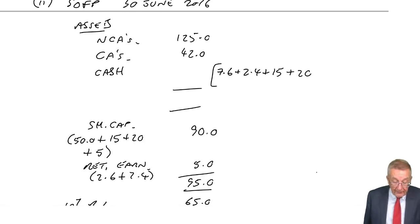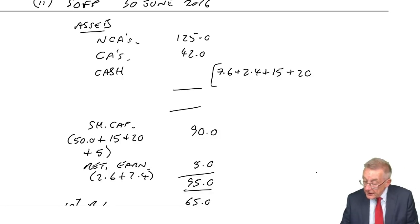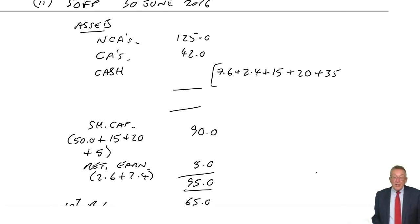Rajiv Patel got shares as well, but that simply replaced his loan. So he didn't actually pay in any cash. What else? The bank loan, not Rajiv Patel's loan. The bank loan, it was refinanced. It was increased to 65 million. So it was 30 million. If it's increased to 65, we've got another 35 million from the bank.